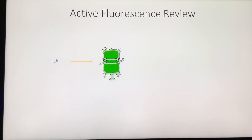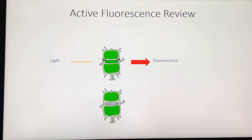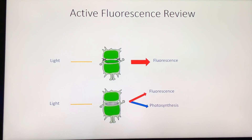This cartoon is a general description of active fluorescence. If light strikes a dead cell, the response is fluorescence. If light strikes a live cell, some of the light is fluoresced while the rest is used for photosynthesis, depending on the physiology of that cell.